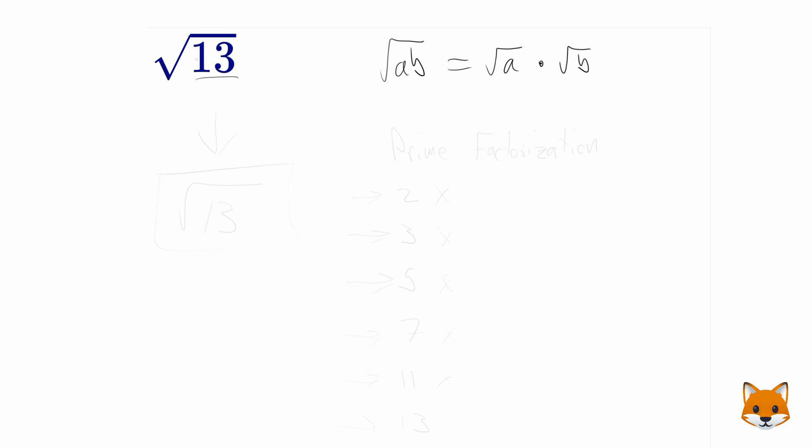...is because if we can break down 13 into a series of numbers being multiplied by each other, then we might be able to pull some of those out outside of the square root. The way you figure this out is by using a technique called prime factorization. I'm just going to write some basic primes here: 2, 3, 5, 7, and 11, and then we'll get to 13.